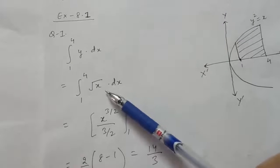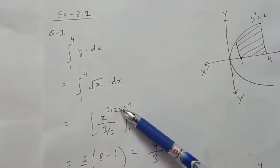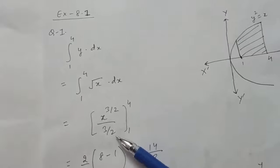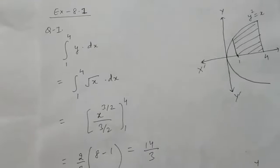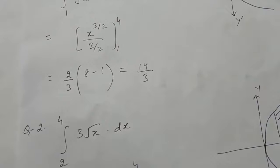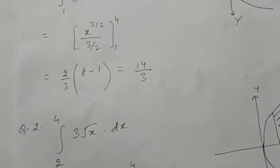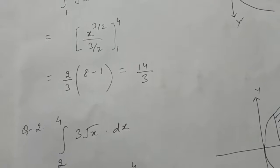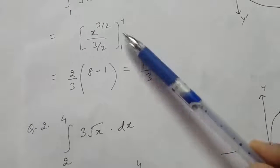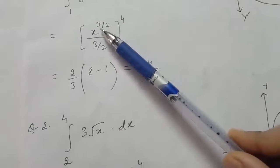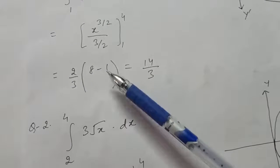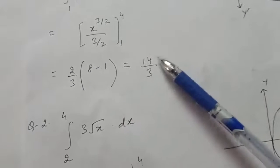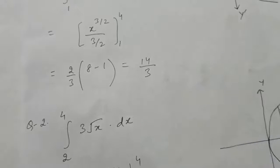Now solve the integral, which is x^(3/2) / (3/2), and the limits are from 1 to 4. Now put the limits: first put the upper limit, so you will get 8. Then put the lower limit — when you put 1, 1^(3/2) is 1 — so you will get the answer as 14/3.